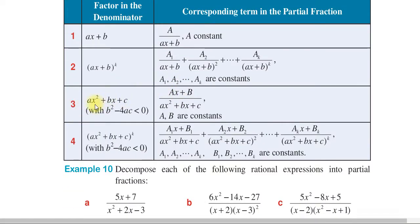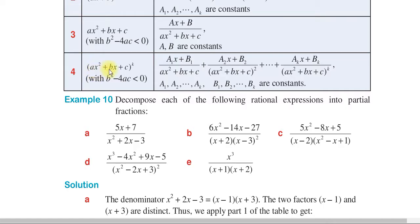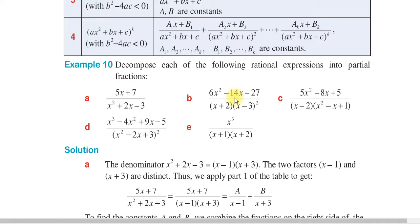The quadratic function is called x² plus bx plus c in the denominator, giving the form (x plus b) over (x² plus bx plus c). The quadratic equation raised to the power of k uses the factorizer form: A₁x plus B₁ over (x² plus bx plus c), A₂x plus B₂ over (x² plus bx plus c), continuing up to Akx plus Bk over (x² plus bx plus c).